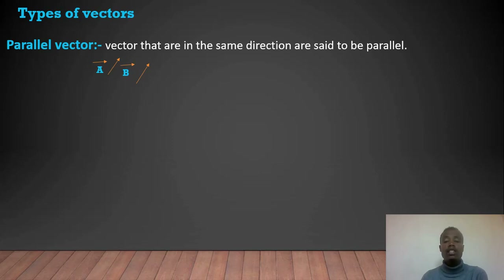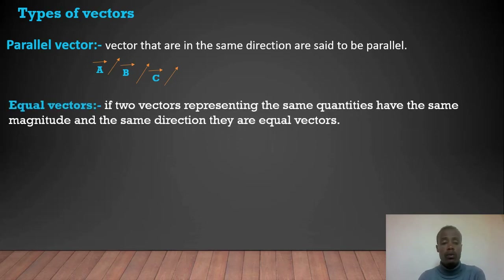If two vectors are in the same direction, they are called parallel vectors. An equal vector: if two vectors representing the same quantity have the same magnitude and the same direction, they are equal vectors.